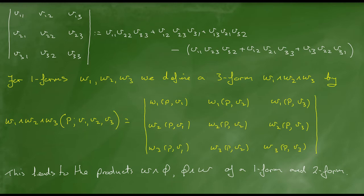We've seen that we can multiply two one-forms together to produce a two-form. And we've also seen in previous podcasts that any two-form can be expressed as a linear combination of products of one-forms. With a little bit of thought, one can take that definition and derive a formula for multiplying an arbitrary one-form with an arbitrary two-form, given that an arbitrary two-form can always be produced as a sum of products of one-forms. So we can take a product omega wedge phi, or phi wedge omega, of a one-form omega and a two-form phi to produce a three-form.